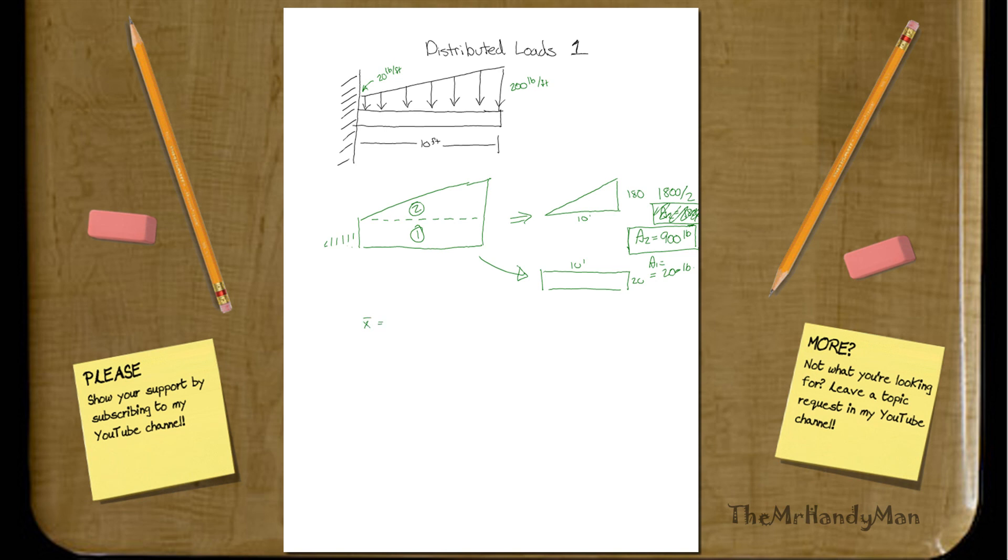And what you'll find is, first of all, let's do the bottom portion, the square, area 1. That's 200 times the distance, which is half of 10 feet, which is going to be 5 feet.